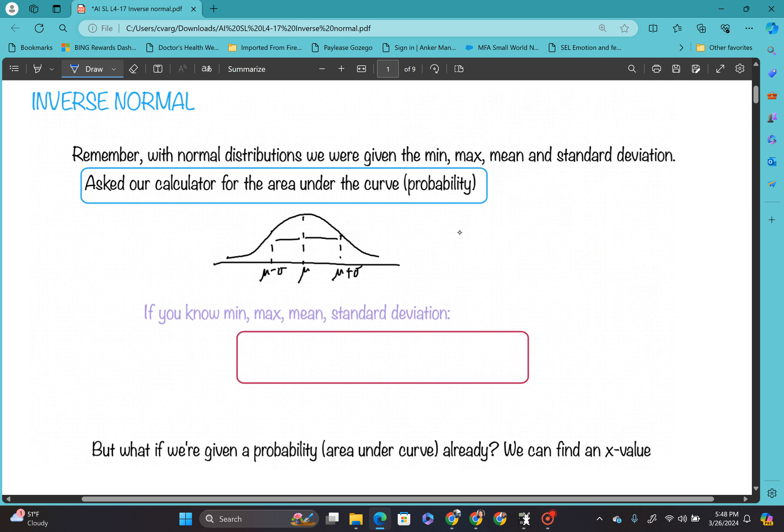And last time we did something called normal CDF, right? We use normal CDF to help us find the area under the curve, which is the same thing as our probability. So to do that, you had to know the min or the lower, the calculator called it, the max which is the upper. You needed to know the mean and you needed to know the standard deviation. And what that gave you was the probability.